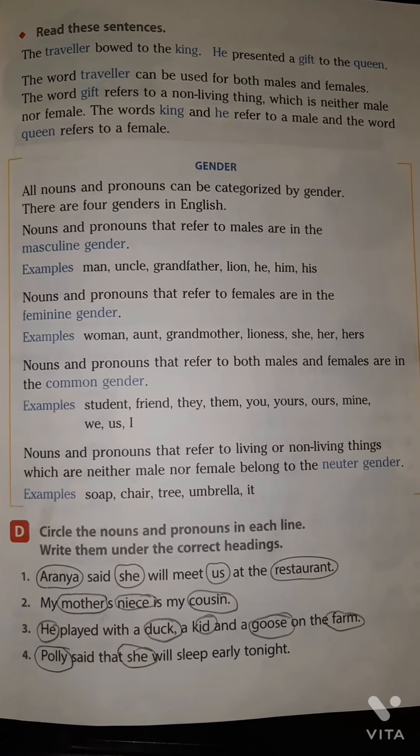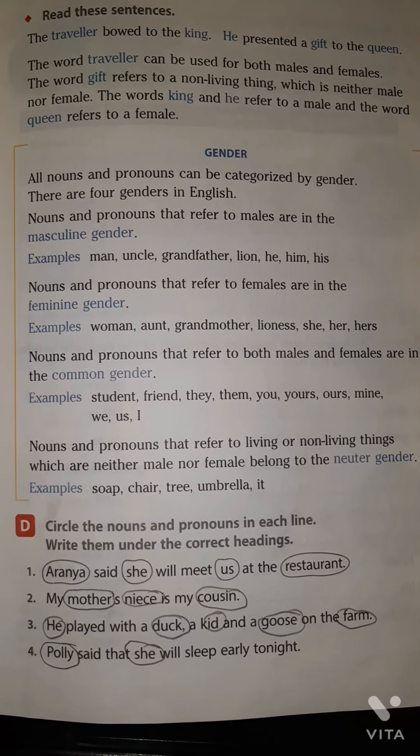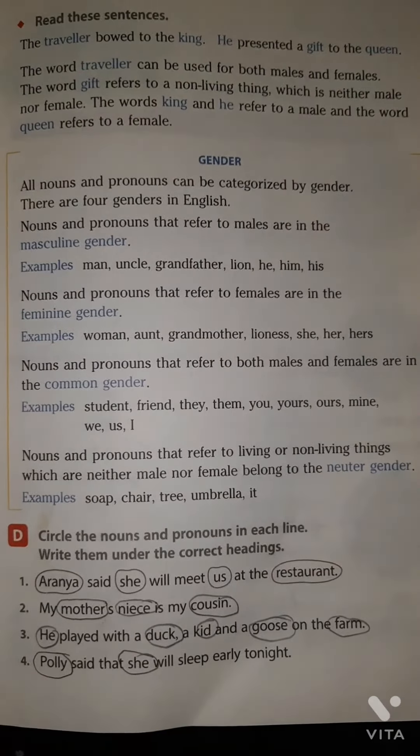Section D: Circle the noun and pronoun in each line, then write them under the correct heading. First: 'Aranya said she will meet us at the restaurant.' Noun: Aranya. Pronouns: she, us. Second: 'My mother's niece is my cousin.' Nouns: mother, niece, cousin. Third: 'He played with a duck, a kid, a goose on the farm.' Noun: duck, kid, goose, farm. Pronoun: he. Fourth: 'Polly said that she will sleep early tonight.' Noun: Polly. Pronoun: she.